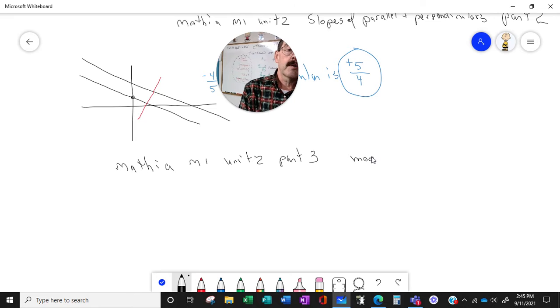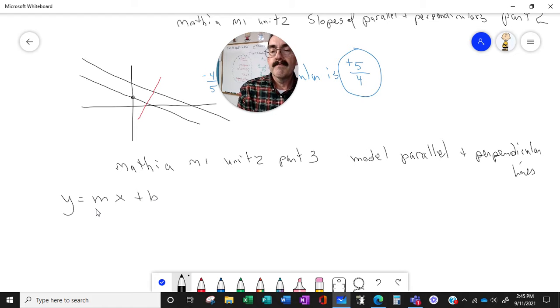And we're going to model parallel and perpendicular lines. Here we have two things that we need to know. Y equals MX plus B, where M is the slope and B is the Y-intercept.